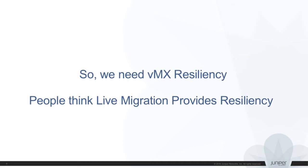One thing that normally comes to people's minds whenever they do any kind of cloud, including OpenStack, is: if something goes wrong, we can just move this VM from one server to another. So it's easy — we'll do live migration, or what VMware calls vMotion. We could do that, and that actually should go a long way.